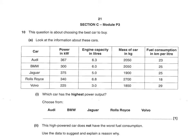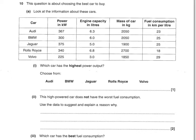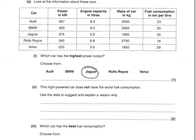Now on to the physics section. This question is about choosing the best car to buy. Which car has the highest power output? Looking at the power output figures, the highest is the Jaguar at 375. The question says this high-power car does not have the worst fuel consumption — suggest and explain a reason why. Looking across the data, the Jaguar's mass is lower than all the others, meaning less force is needed to accelerate it.